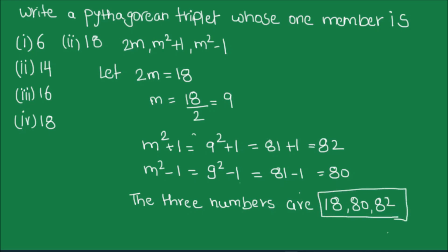This is how we find the Pythagorean triplet numbers when one of the numbers is given. I hope this video is helpful to you. If you like the video, please hit the like button and subscribe to my channel for more math videos. Thanks for watching.